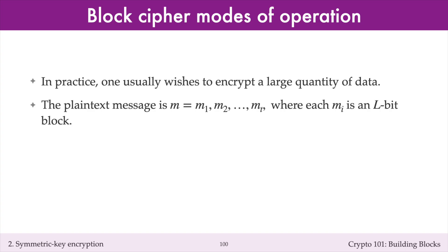When we studied block ciphers, we only considered the encryption of a single block of plaintext of length 64 bits in the case of Triple DES, and 128 bits in the case of AES.